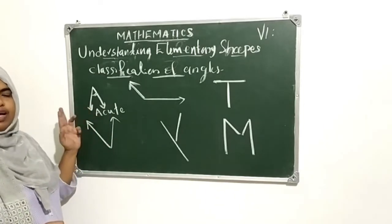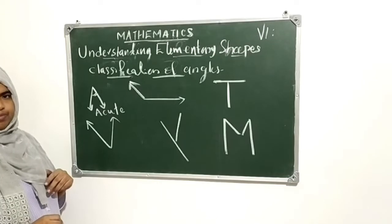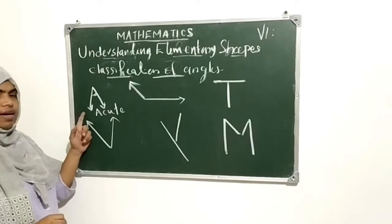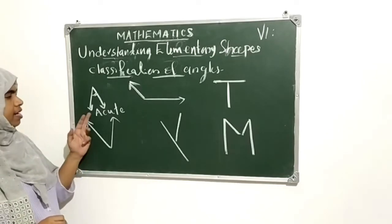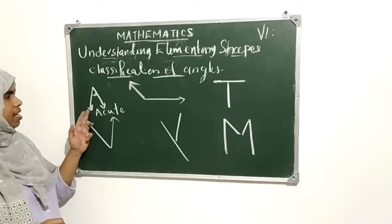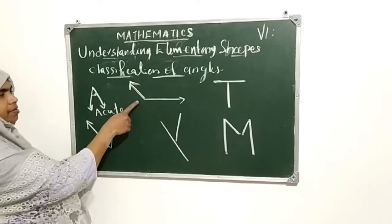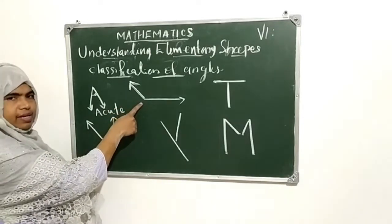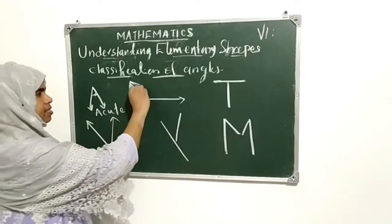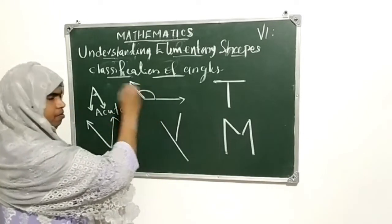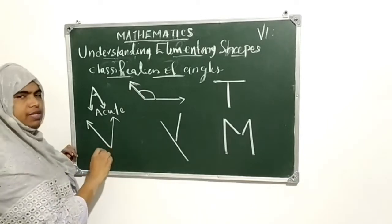Acute angle means less than 90 — less than a right angle. That is an acute angle. This angle here is also called an acute angle.